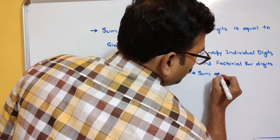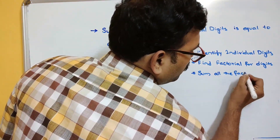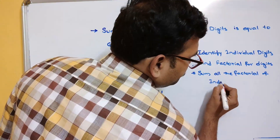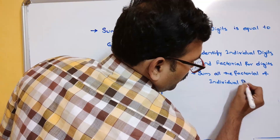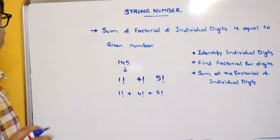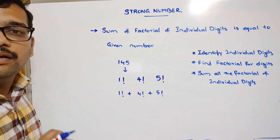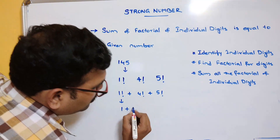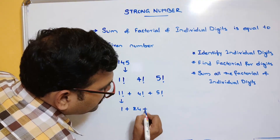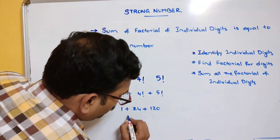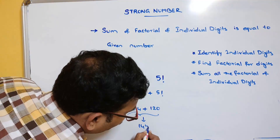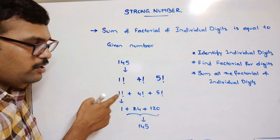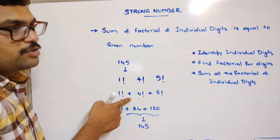Next, sum these factorials: 1 factorial plus 4 factorial plus 5 factorial. We need to check whether the sum is equal to the given number. So this is 1 plus 24 plus 120, which is 145 — the same number. So: identify the individual digits, find the factorial, and add the sum. These are the three steps.